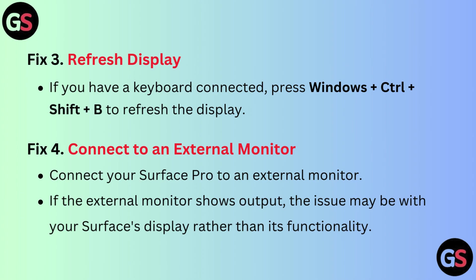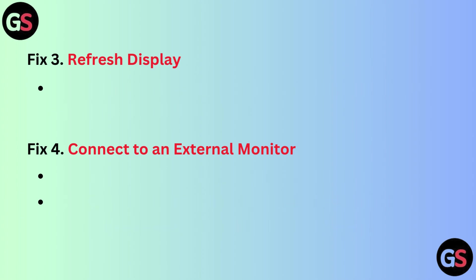Fix 4: Connect to an external monitor. Connect your Surface Pro to an external monitor. If the external monitor shows output, the issue may be with your Surface display rather than its overall functionality.